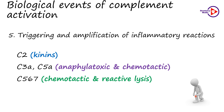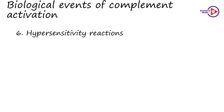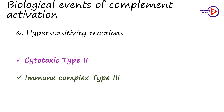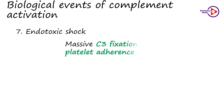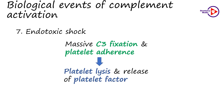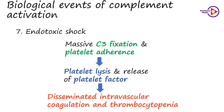C567 has chemotactic and reactive lysis activity. It induces neutrophils and monocytes to adhere to the endothelial cells of blood vessels, thereby extravasating and migrating to the inflammatory site. The complement system participates in cytotoxic type 2 hypersensitivity, for example transfusion mismatches, and in type 3 immune complex hypersensitivity, for example Arthus reaction and serum sickness. In endotoxic shock, there is massive fixation of complement C3 and platelet adherence, causing large-scale platelet lysis and release of large amounts of platelet factor, leading to disseminated intravascular coagulation and thrombocytopenia. Gram-negative septicemia and dengue hemorrhagic syndrome have similar pathogenesis.